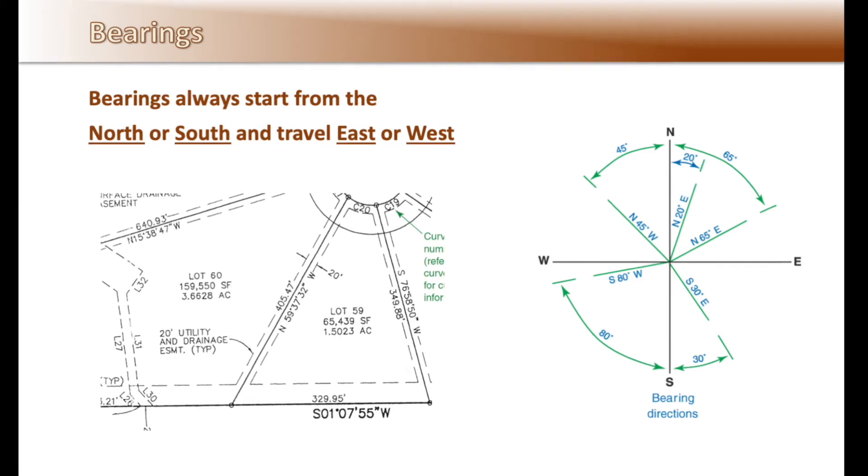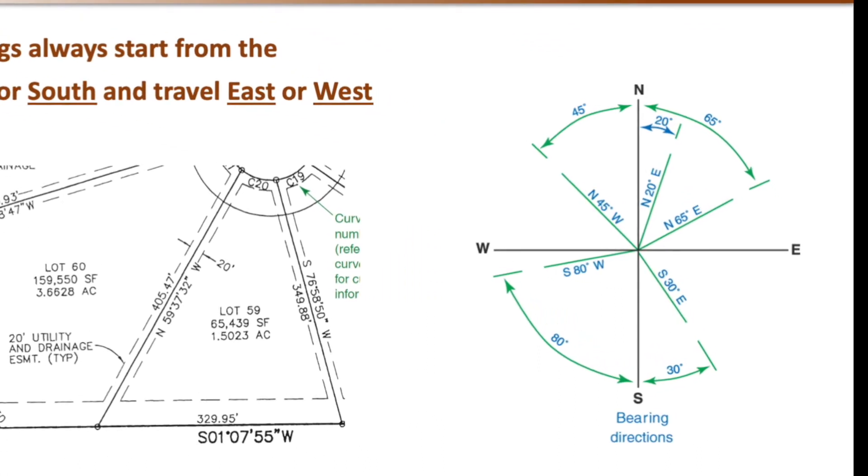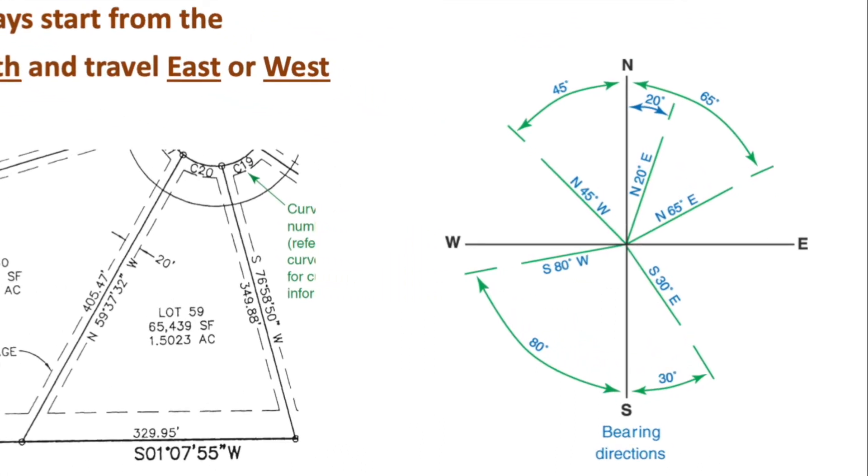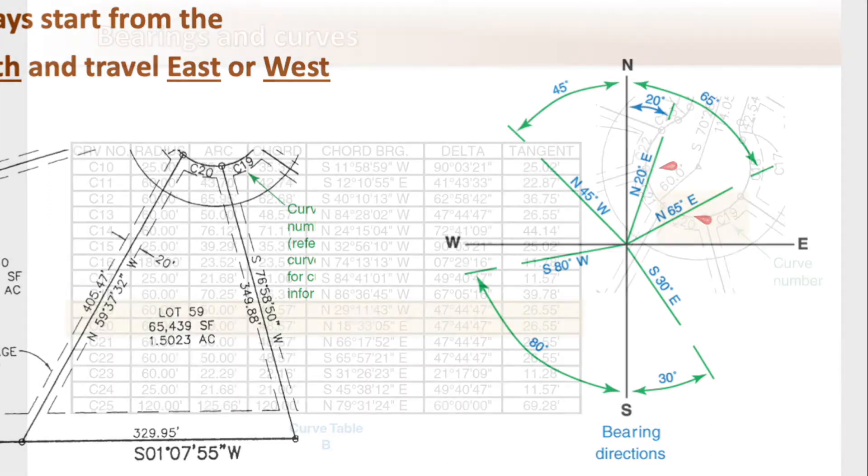Some more examples up here on the compass. Looking here at north going toward the west, north 45 degrees west or down here at the south, south 80 degrees west. Notice over here on the other side we're going north toward the east, north 20 degrees east or north 65 degrees east.